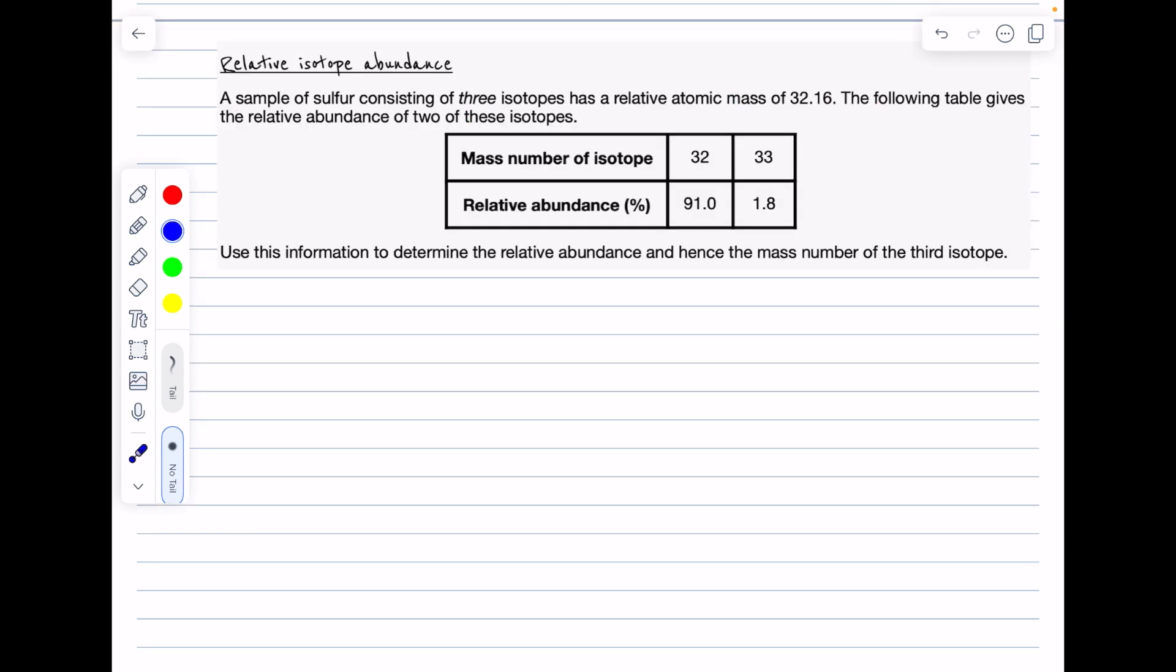Now let's make this more of an A-level style question. A sample of sulfur consisting of three isotopes has a relative atomic mass of 32.16. The following table gives the relative abundance of two of these isotopes. Use this information to determine the relative abundance and hence the mass number of the third isotope.